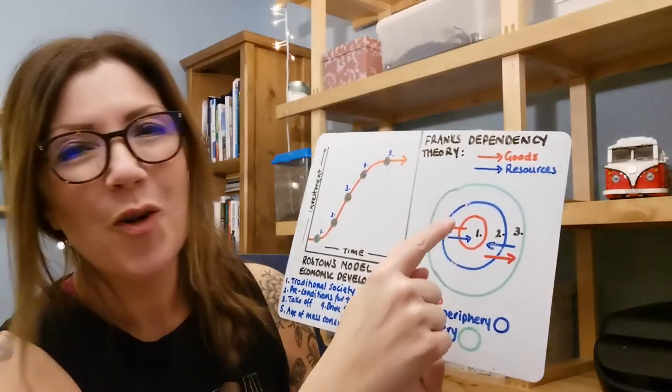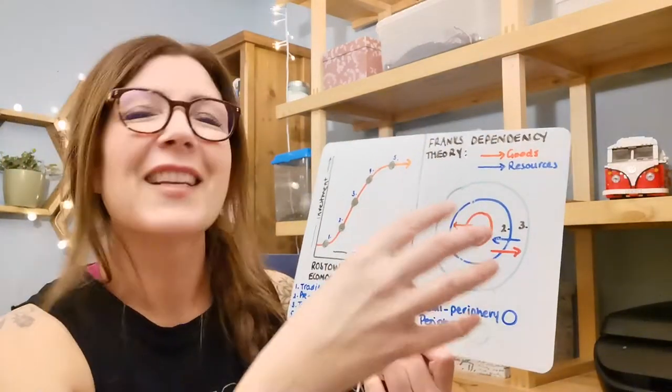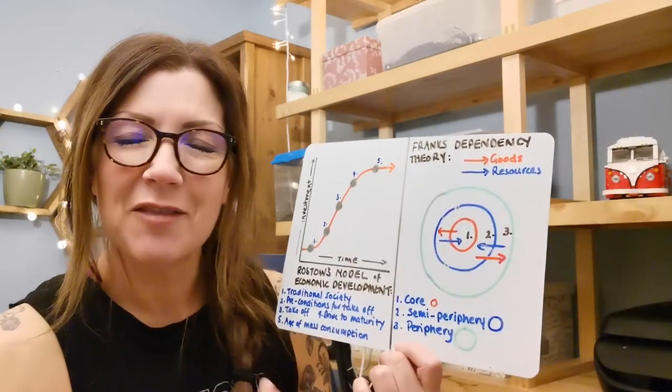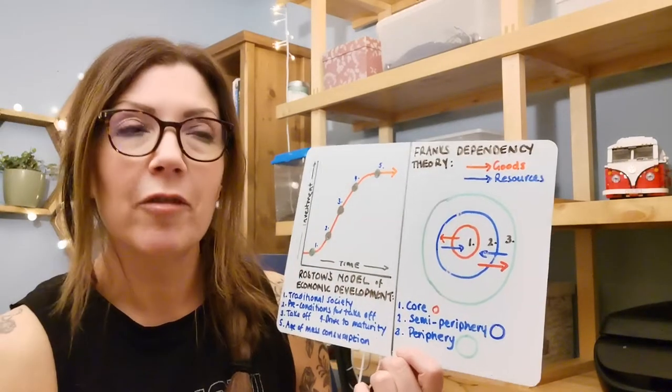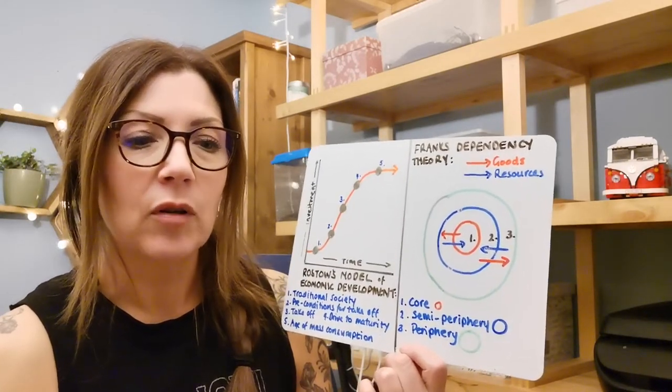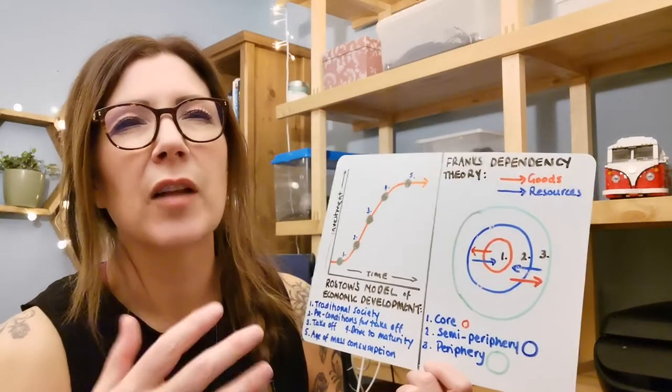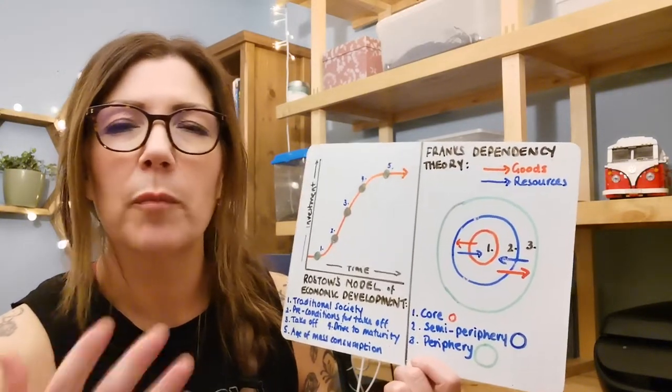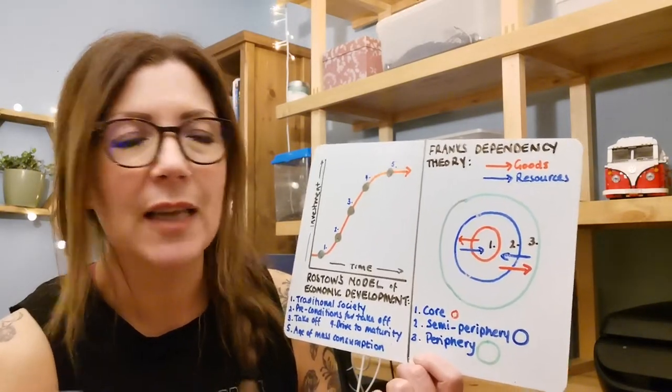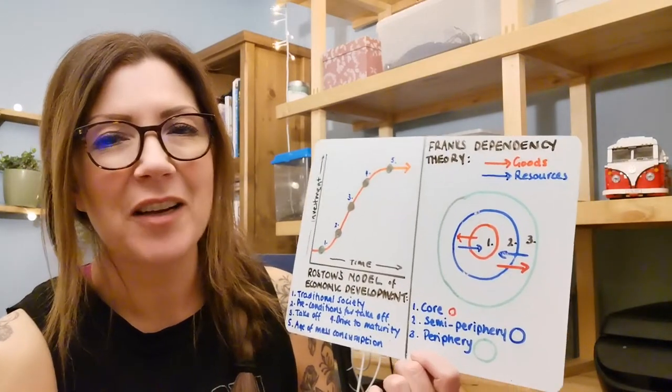So the core region takes and exploits the raw materials from the periphery, and the periphery then isn't able to manufacture because the WTO isn't strong enough to stop taxes and tariffs, which again you can check out in another video.